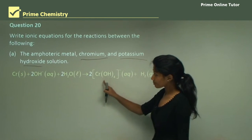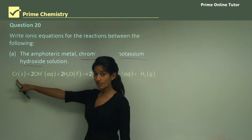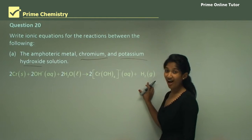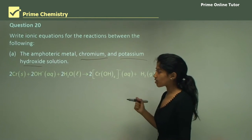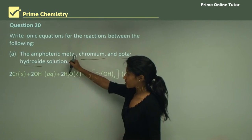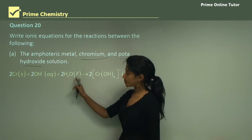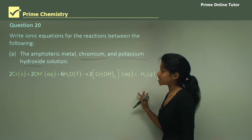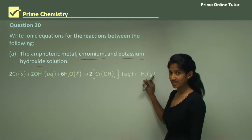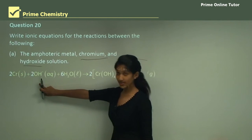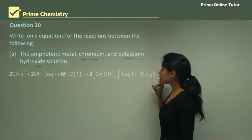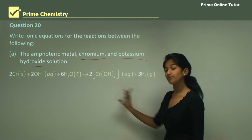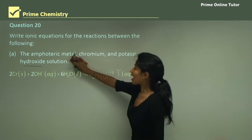There are 2 chromiums in the chromate ion but only 1 chromium on the reactant side, so put a 2 in front of chromium. Oxygens are still not balanced, so put a 6 in front of H2O — this balances the oxygens but disturbs the hydrogen balance. To balance the hydrogens, we have 2 plus 12 which is 14. Putting a 3 in front of H2 gives 6 plus 8 which is 14 hydrogens. That is how you balance this chemical equation.